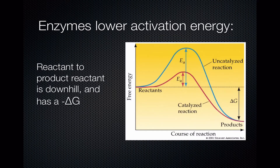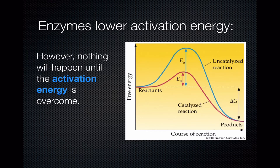It's easy to understand how enzymes speed up chemical reactions if you understand a concept called activation energy. Enzymes lower activation energy. In this graph we see a chemical reaction that is exothermic or spontaneous — it's releasing free energy because the reactants are falling downhill to products. Reactants are here, products are down here, and because it's downhill the delta G is negative. Nothing's going to happen until we get up over the hill, so we've got to take the reactants uphill by an amount marked as E sub A.